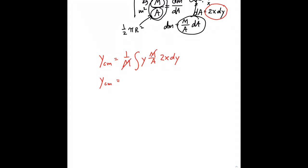The m's cancel out, and I can pull the 2 and the A out of the integral. So the location of the center of mass along the y-axis is 2 over A times the integral of x, y, dy.